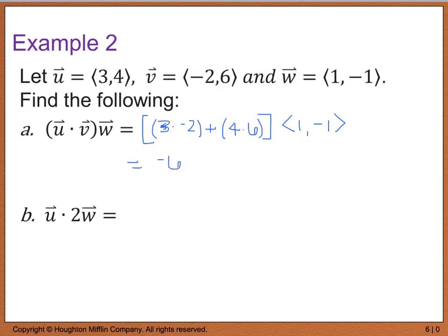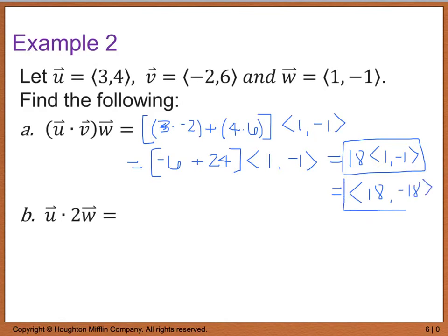So when I simplify this, 3 times a negative 2 is negative 6, plus 24, and that's being multiplied by 1, negative 1. So now if I simplify that, negative 6 plus 24 is 18, and 18 times 1, negative 1. So you can either leave your answer like this, or you can actually go ahead and distribute, and that will give us 18, and a negative 18. So either one of these, I would accept.